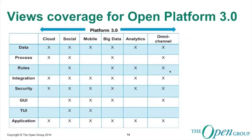It is very key to understand that social, mobility, analytics, and cloud, though they can be individually enabled and used, it is more important that their convergence gives rise to a stronger ecosystem like the Internet of Everything. It is also important to look at the influence on enterprise architecture. We know that enterprise architecture has certain views: information, process, rules, integration, and security. The challenge — which Platform 3.0 will also address — is how cloud, mobility, big data analytics, and omni-channel experiences will change those viewpoints and impact stakeholders. With that, I will close my session.